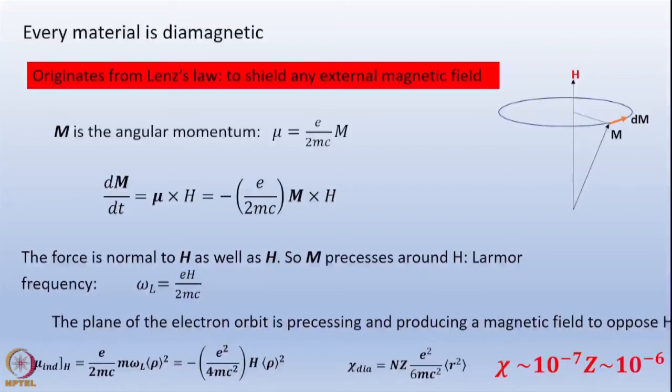I can add up this magnetic field orbit by orbit and calculate the diamagnetism in the material. The force is normal to H as well as M, and the M precesses around the applied field. The Larmor frequency is EH by 2MC. Then the electron orbit is precessing and producing a magnetic field to oppose this applied field H. The mu induced is given by E by 2MC times M omega L rho square. It's the classical Lenz's law.